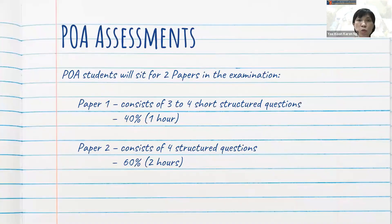POA students will sit for two papers in the examination. Paper 1, which has a weightage of 40%, consists of 3 to 4 short structured questions. Paper 2, which has a weightage of 60%, consists of 4 structured questions.